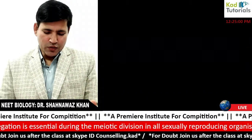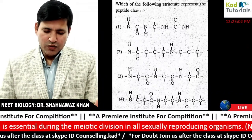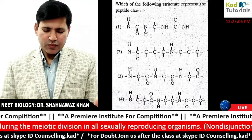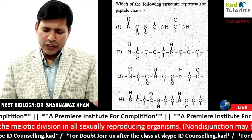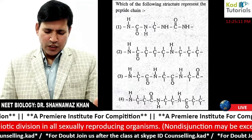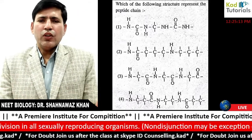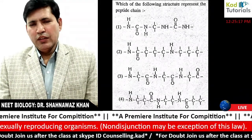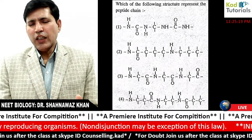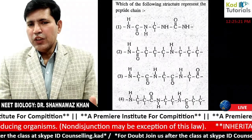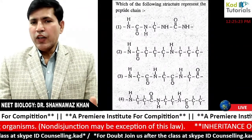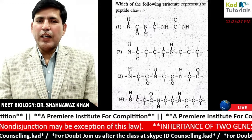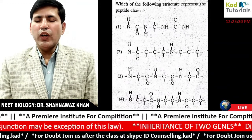The next question is about which of the following structures represents a peptide chain. For a peptide chain, two things must be considered: all the amino acids must be alpha amino acids, and the bonding will be amide bonding — C double bond O, N-H bonding on each area.